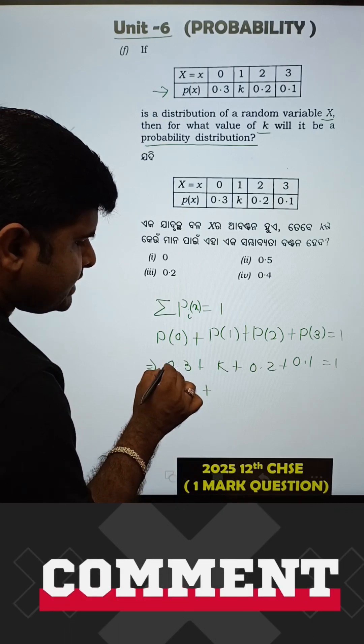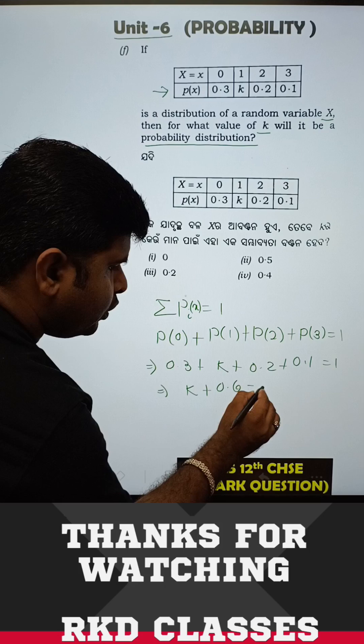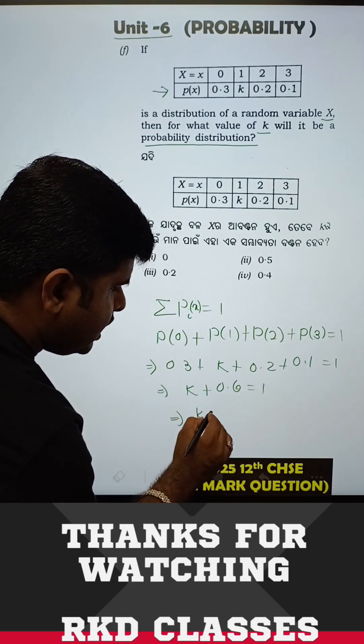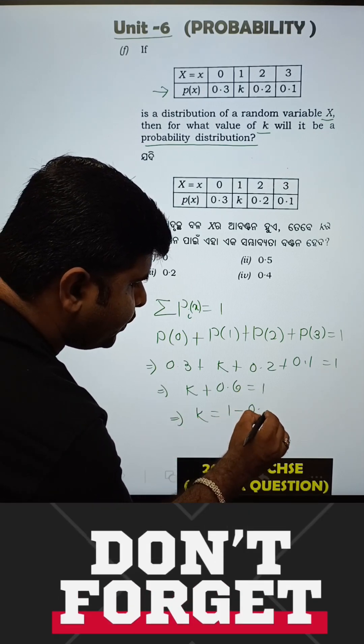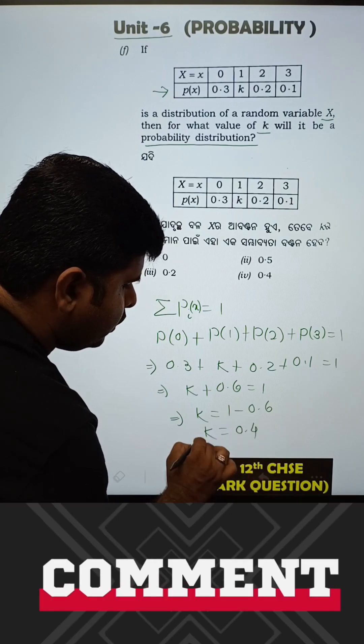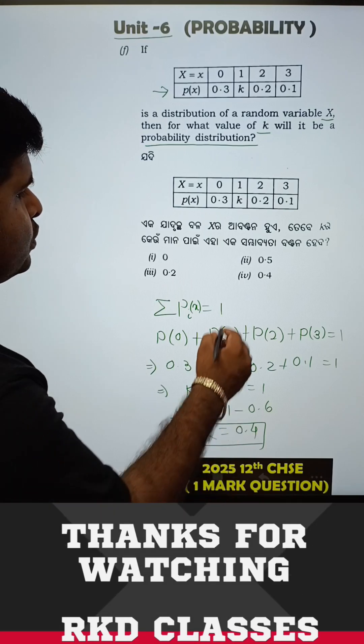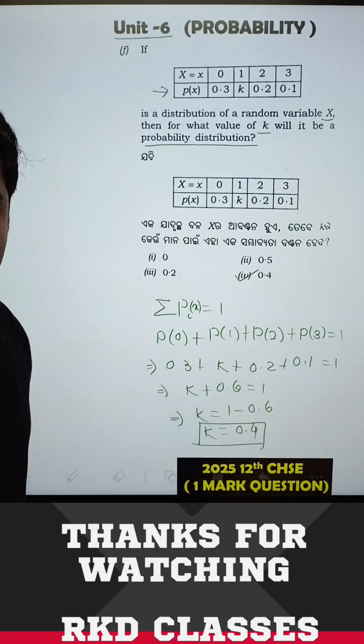So K plus 0.3, 0.5, 0.6, 0.6 equal to 1. This means K equal to 1 minus 0.6, answer is 0.4. So K equal to 0.4. Check the option, K equal to 0.4, option number 4.